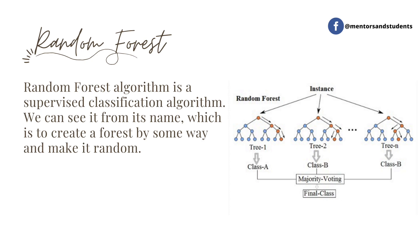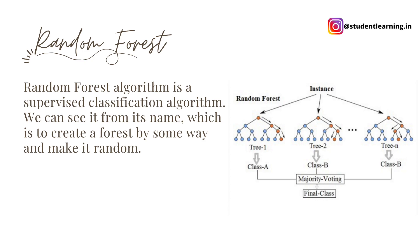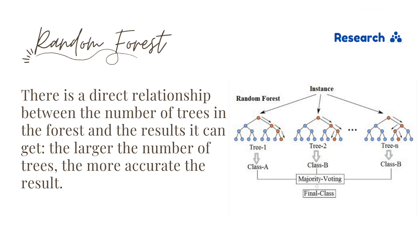Now, coming to the main topic: random forest. Random forest is the best algorithm for supervised classification and regression. It works like its name — it creates a forest in some way and makes it random. There is a direct relationship between the number of trees in the forest and the result it can get. The larger the number of trees, the more accurate the result. That means more trees equals more accuracy.